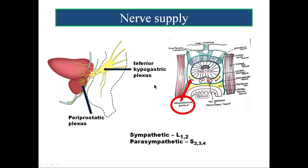Coming to the nerve supply of the prostate, both sympathetic and parasympathetic nerves supply the prostate. The sympathetic arises from L1 and L2; parasympathetic nerves from S2, S3, and S4 take part in the formation of the inferior hypogastric plexus. This plexus gives nerve fibers forming a plexus in the posterolateral part of the prostate and bladder — the periprostatic plexus.